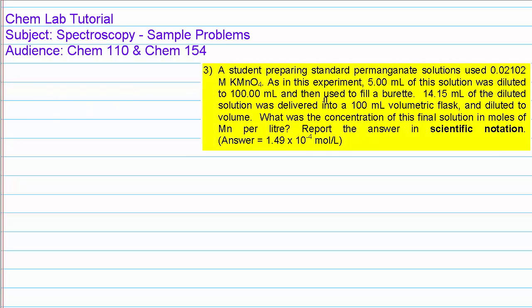This video tutorial deals with the spectroscopy experiment, and specifically we're going to look at problem number 3 in your study guide for that experiment. Remember, the printed solution is given in Appendix 2 of your lab manual. This problem closely parallels the part of the procedure where we need to prepare a series of standard solutions — in this case, standard solutions of potassium permanganate — and in this problem, one of those solutions is being prepared.